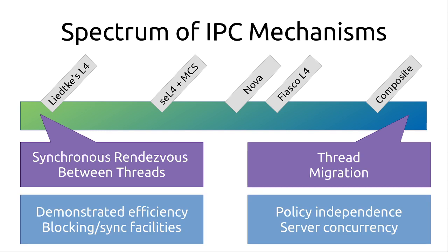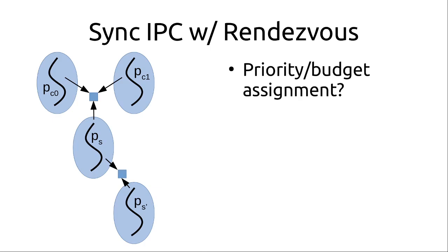The high-level takeaways are that synchronous IPC between threads is very fast — that's been shown since 1993, so there's a long history of it being a sound structuring technique for efficient microkernels. But an implication is that a lot of the blocking and synchronization facilities are actually defined by the kernel. As we look for non-functional properties in terms of predictability, that can start to intrude. Thread migration, on the other hand, is very policy-independent — you define your blocking, synchronization, and scheduling policies at user level. But it imposes server concurrency within the system, at least by default.